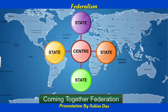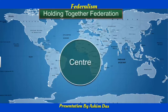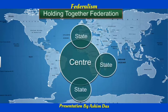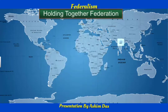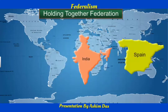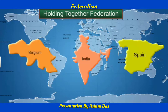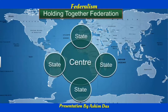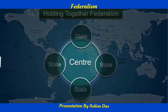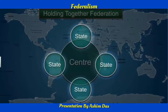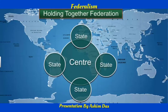On the other hand, in holding together federations, a large country decides to divide its power between the constituent states and the national government. India, Spain, and Belgium are examples of holding together federations. In this type of federation, the central government tends to be more powerful with regard to the states, and the different constituent units may have unequal powers.